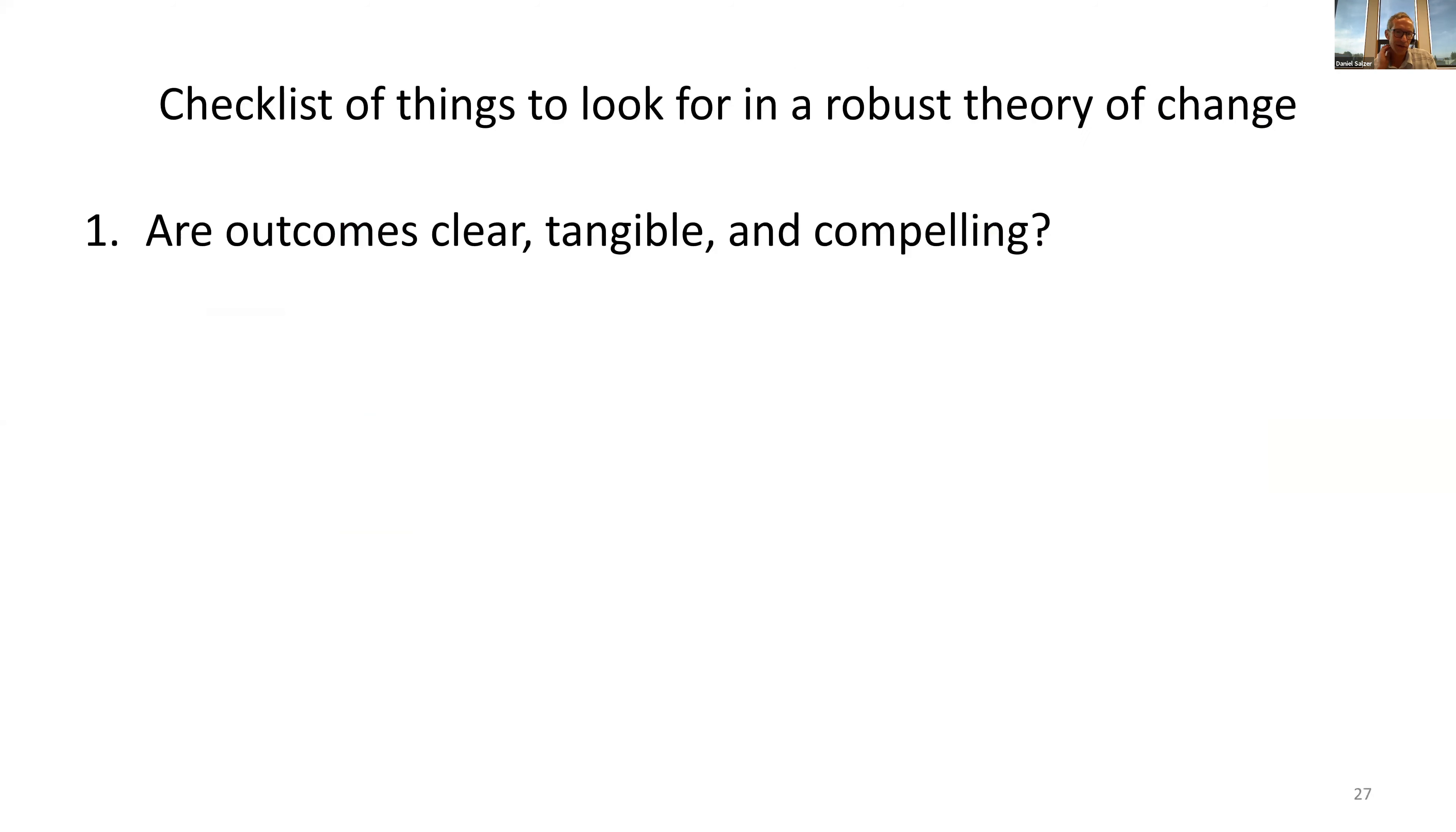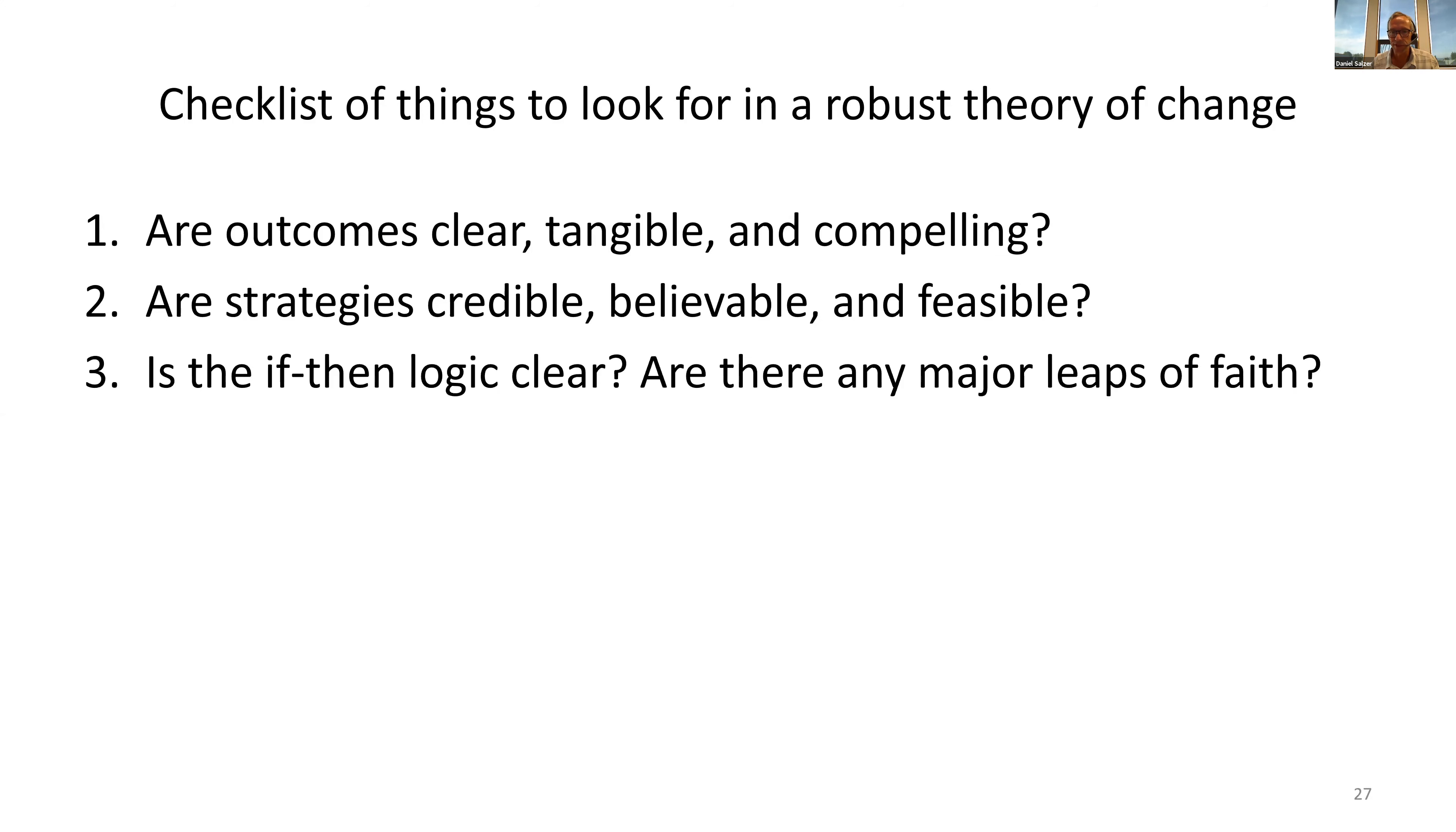Here across all the different narrative, table, and diagram approaches, here's a checklist of things to look for in a robust theory of change. Do you see really good compelling clear tangible results statements? Are they credible, believable, and feasible? Is the if-then logic clear? Are there any major leaps of faith?